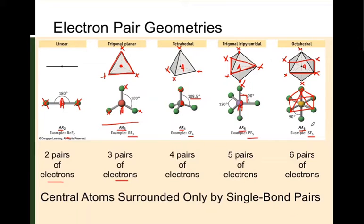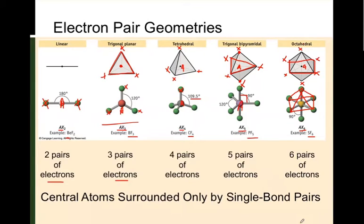In each of these five geometries, all the electron pairs have been bonding pairs, so the electron pair geometry is the same as the molecular geometry. These five structures — linear, trigonal planar, tetrahedral, trigonal bipyramidal, and octahedral — are the most common and the ones we need to be familiar with. We'll be considering examples shortly where the electron pair geometry and molecular geometry are not the same.